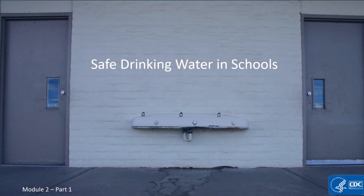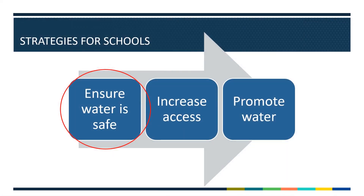Welcome to the second module in CDC's online training series about water access in schools. In this presentation we will address key steps schools can take to ensure that drinking water in the school building is safe to drink. Determining that drinking water is safe from harmful contaminants is the first issue schools should address when working to ensure that students and staff have adequate access to water throughout the school day.